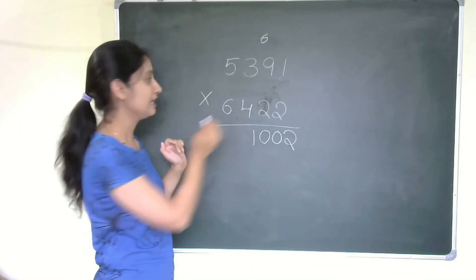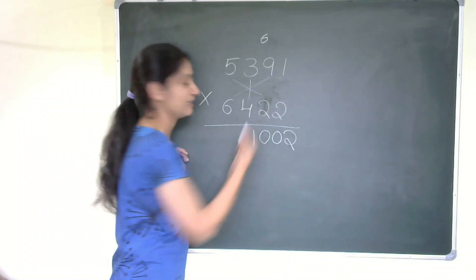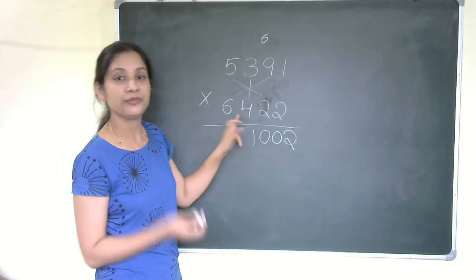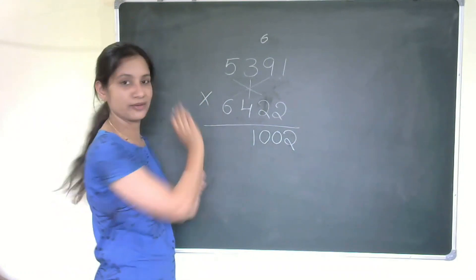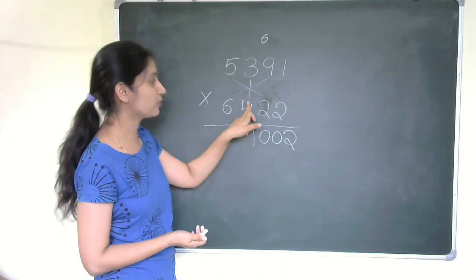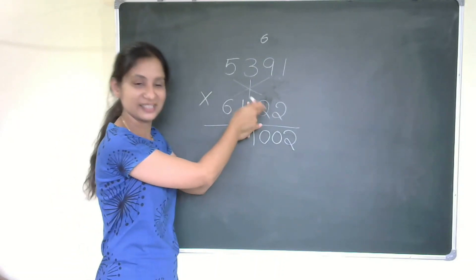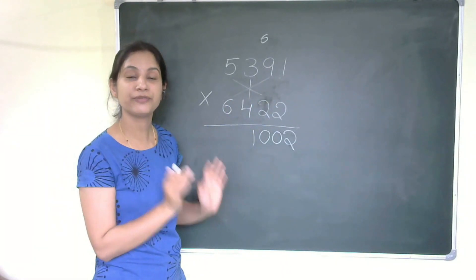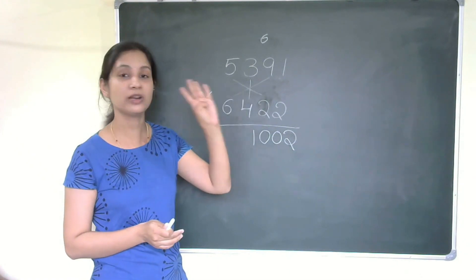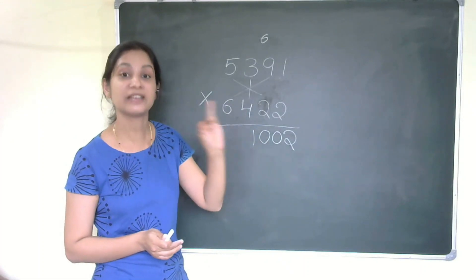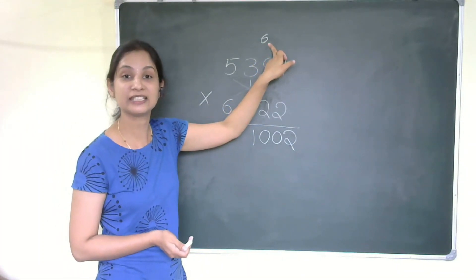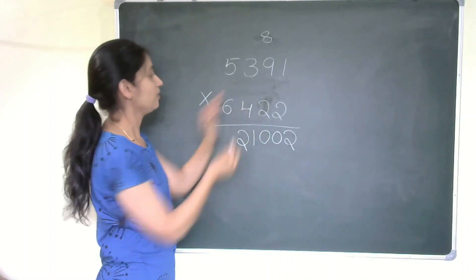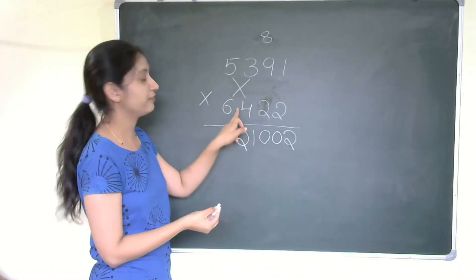Step five, shifting the pattern to the left-hand side: three fours are twelve, plus five twos are ten — twelve plus ten is twenty-two. Plus nine sixes are fifty-four — fifty-four plus twenty-two is seventy-six. Plus carry-over six is eighty-two. Write two, carry over eight.